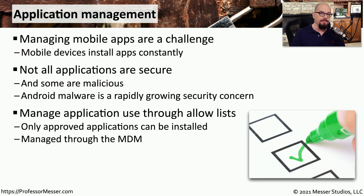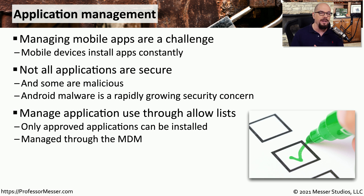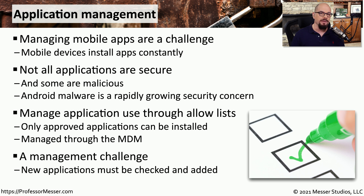A good way to manage this application installation process is through the use of allow lists. The administrator of the Mobile Device Manager would have a list of known trusted applications added into the MDM configuration. Users would then have this list of available applications and can choose these known good apps to install. Anything outside of that list would not be installed onto the mobile device. This adds overhead for the MDM manager, who must know what new applications need to be added or removed.